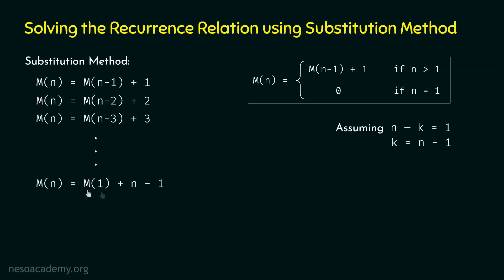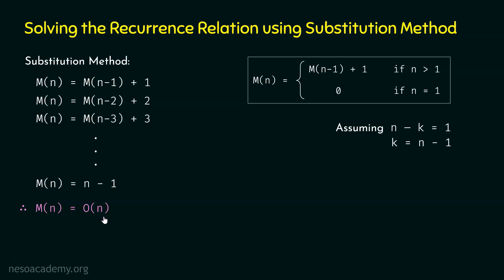We know m(1) = 0, so we get 0 + (n-1) = n-1. Therefore, m(n) = n-1. This means in order to compute factorial of n, a total of n-1 multiplications are needed. We can represent this using asymptotic notation: m(n) is O(n).